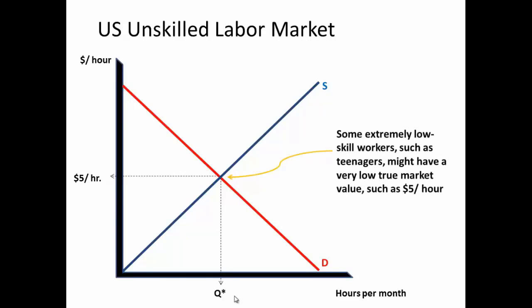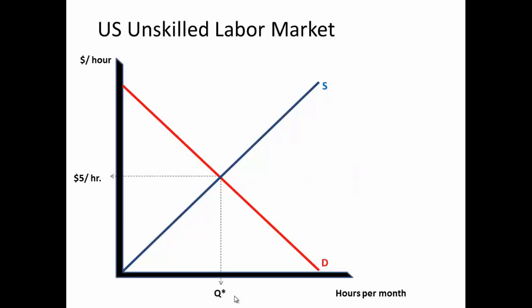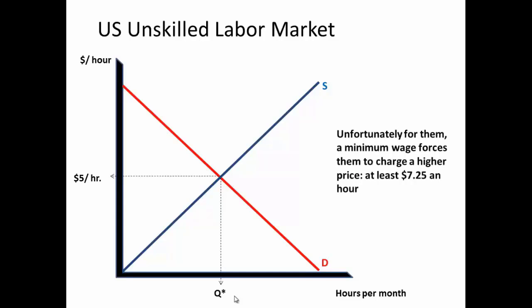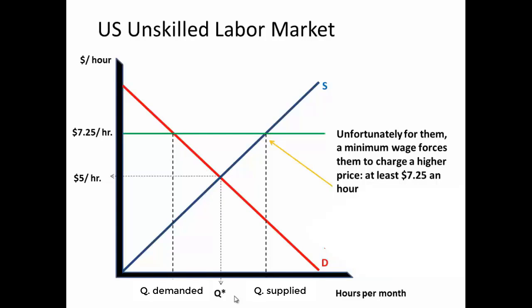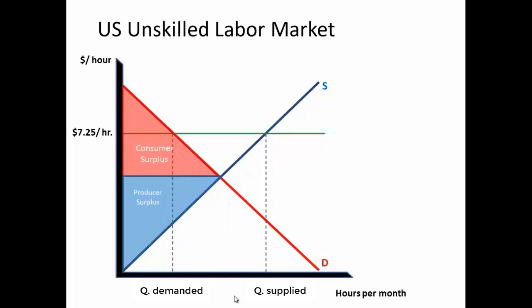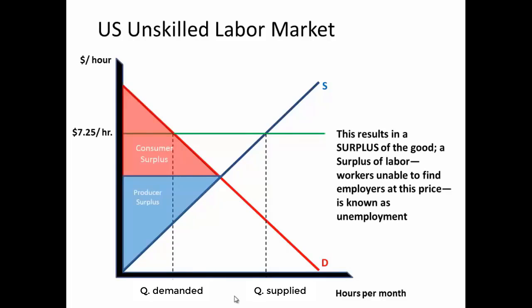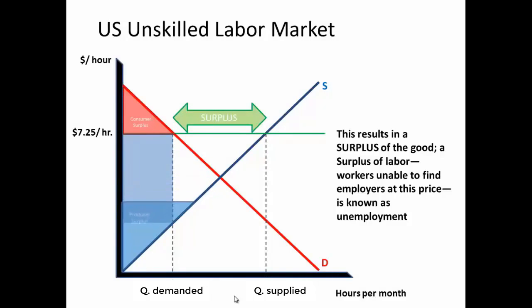There are some workers out there with very little skill and experience who might only have a true market value of, say, $5 an hour. For these workers, the minimum wage is going to force them to charge a price that's higher than they're worth — at least $7.25 an hour. At this higher price, quantity supplied by the young workers is going to be much larger than the quantity demanded by companies who might be willing to hire them. This generates a surplus of the good — a surplus of labor, known as unemployment. It's going to reduce consumer surplus of the companies that might otherwise hire these workers, and it's going to shift producer surplus, possibly reducing it for some workers while possibly increasing it for a few others.